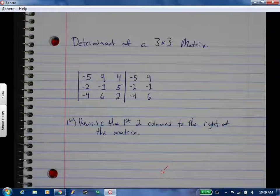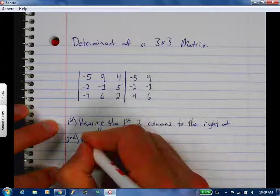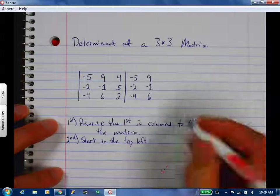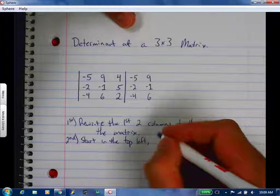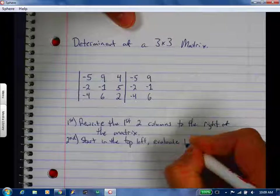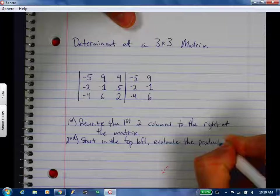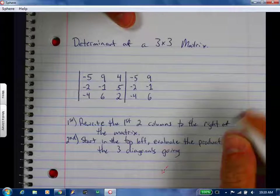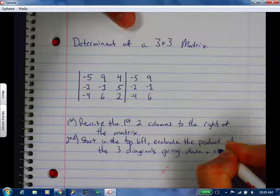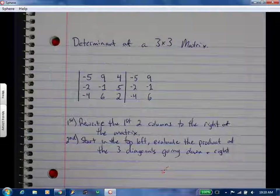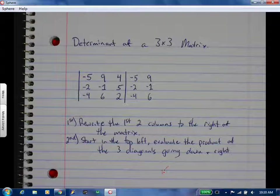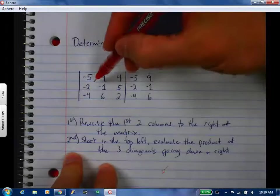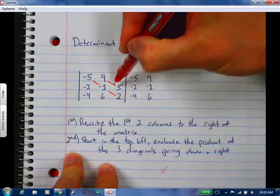All right, second step, here's when we actually start doing stuff. Start in the top left. We're going to evaluate the product of the three diagonals going down and right. We're still using diagonals. We just found that first basic diagonal with two by two. We're still doing diagonals, but now we have to have three of them because we have a lot bigger system. So we're looking at this diagonal, this diagonal, and this diagonal. This is why we wrote those two columns on the outside.